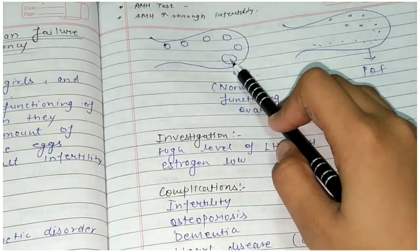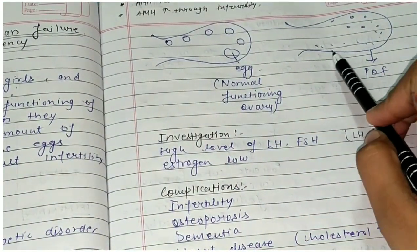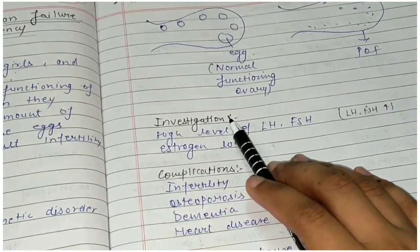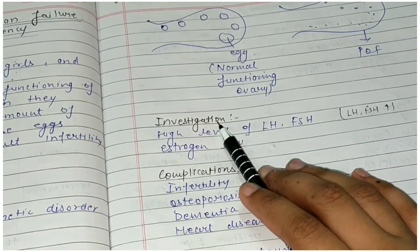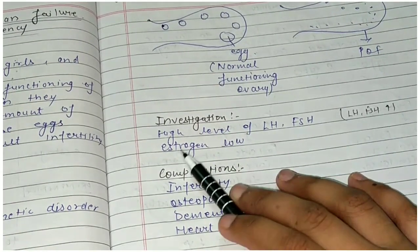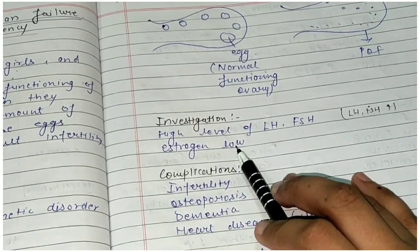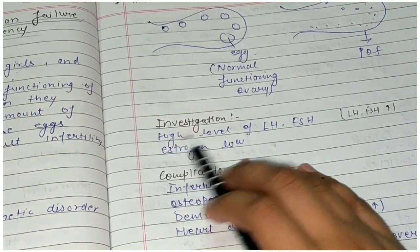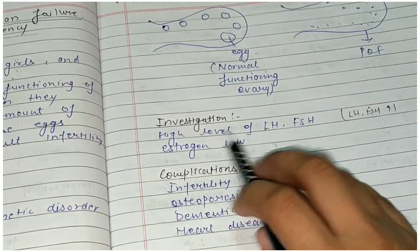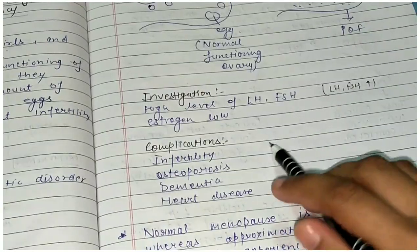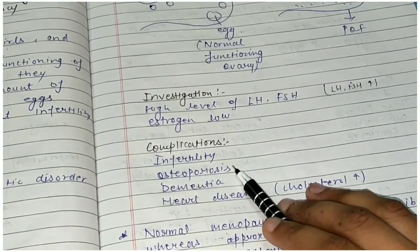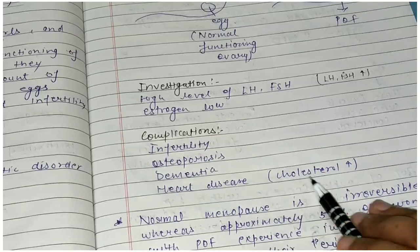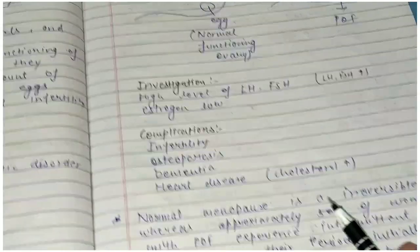On investigation, we find estrogen levels are low because the ovaries are not functioning, and LH and FSH levels are high. Complications include infertility, osteoporosis, dementia, and heart disease because cholesterol increases.